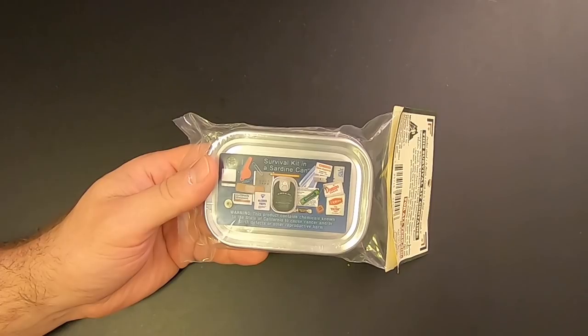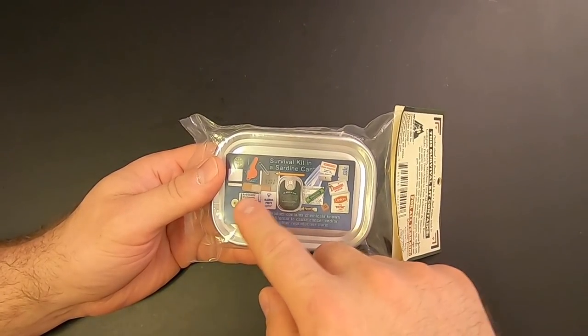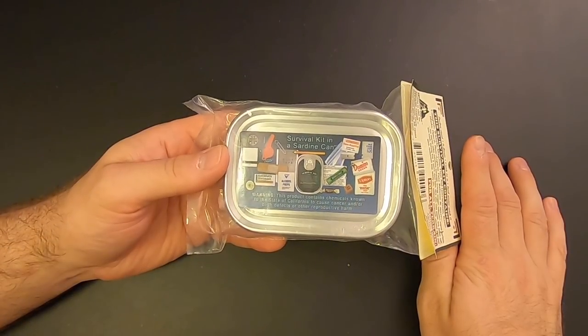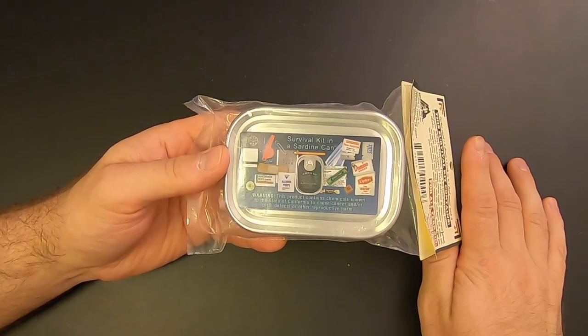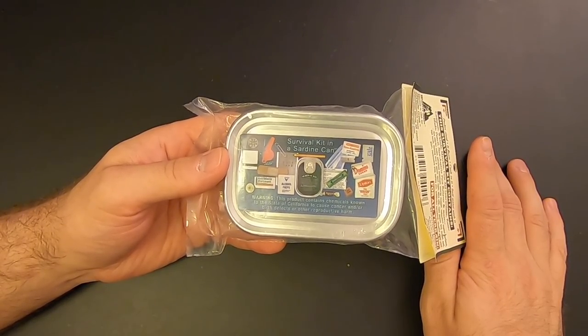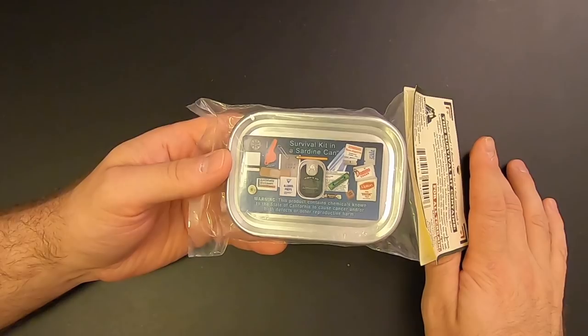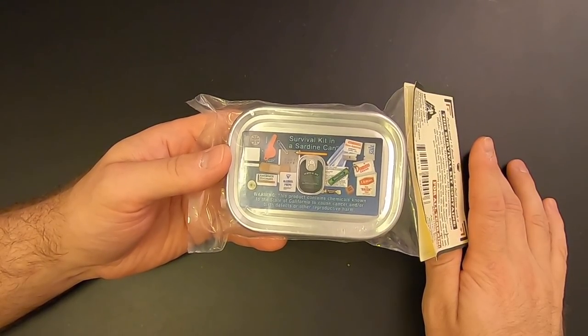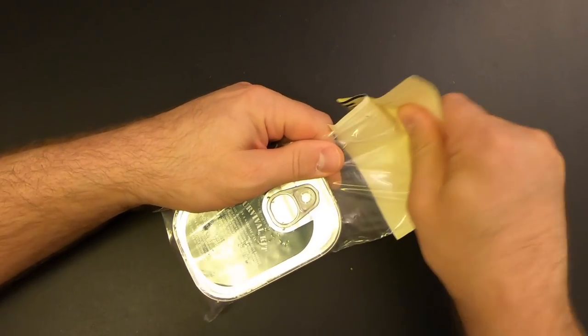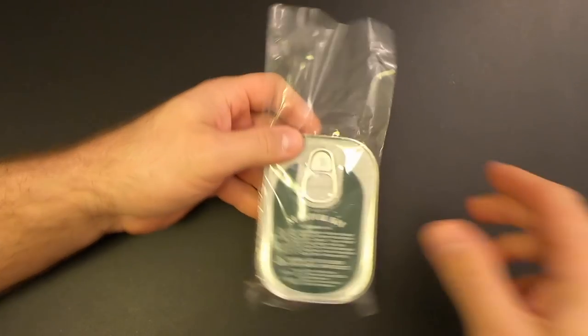Because the Coghlan's kit really didn't have any first aid items or food items, and this one does. So the Coghlan's kit is more about gear, whereas this one is more about items that can be used on or in your body. And actually, the fact that these two kits are quite different is a good thing for us, because at the end of this video, when I repack these kits to make a better kit, it means that we can combine the two kits without a lot of overlap. So let's go ahead and open up the Whistle Creek survival kit in a sardine can.